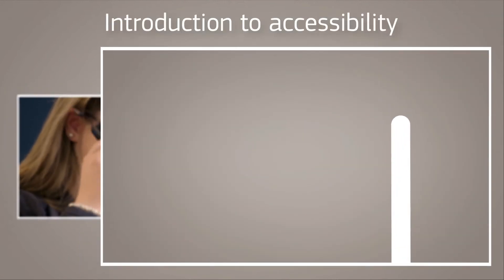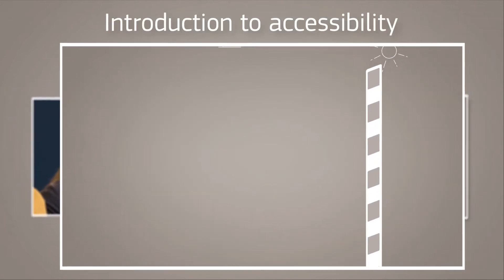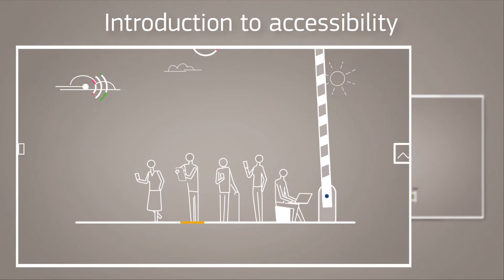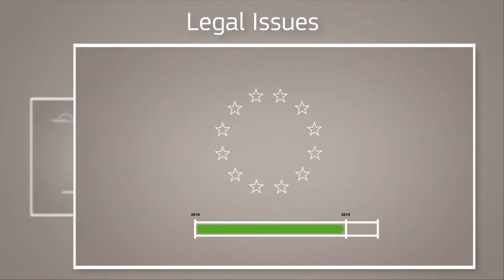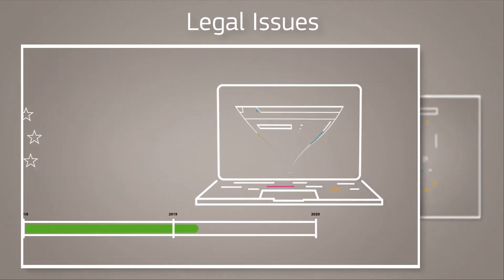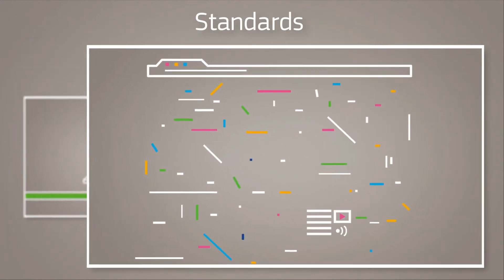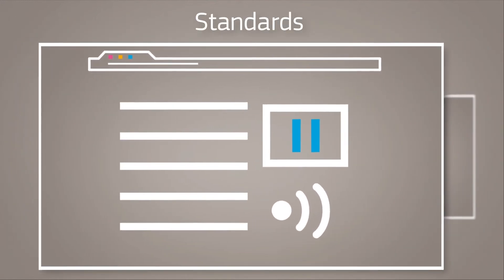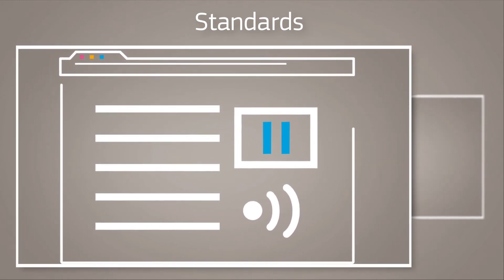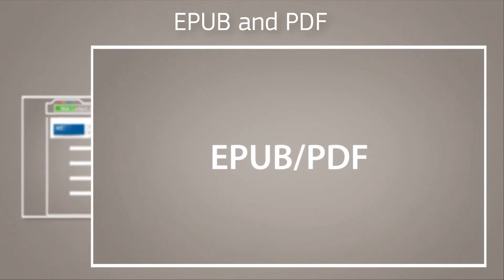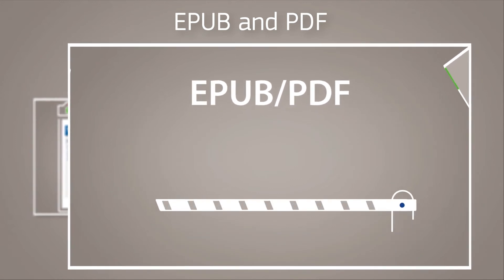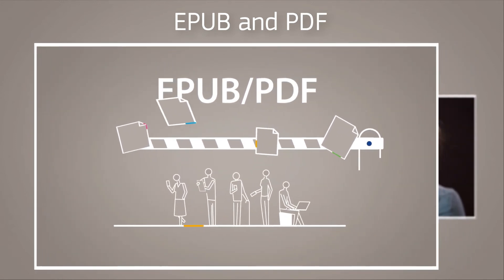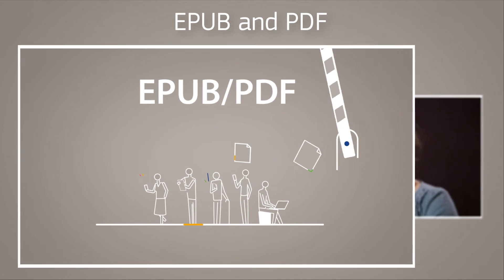This video explains what accessibility is about and why it is important. Another video presents the legal framework for accessibility. The series also includes a video explaining practical accessibility solutions for digital publishing, and another video introduces two different digital publishing standards that enhance accessibility: EPUB and PDF.